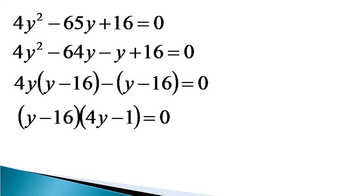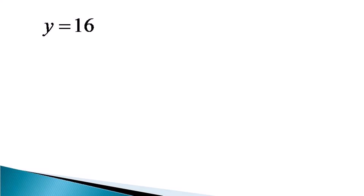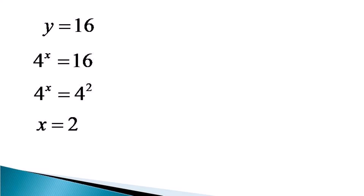This equation gives us two solutions. The first one is y is equal to 16 and the second is y is equal to 1 by 4. Proceeding with the first solution, y is equal to 16, and substituting back in terms of x, we get 4 raised to the power x is equal to 16. Representing 16 as 4 raised to the power 2, the equation becomes 4 raised to the power x is equal to 4 raised to the power 2. Since the bases are equal, the exponents must also be equal, giving the first value of x as equal to 2.